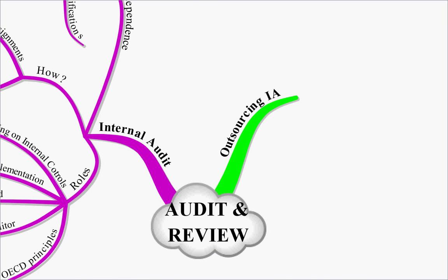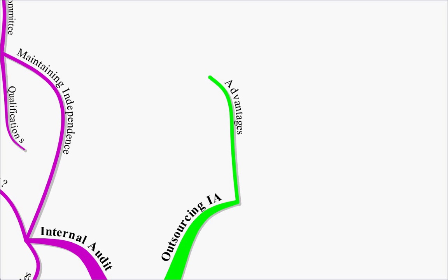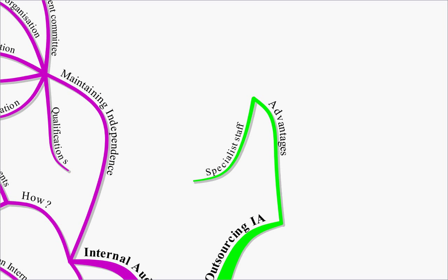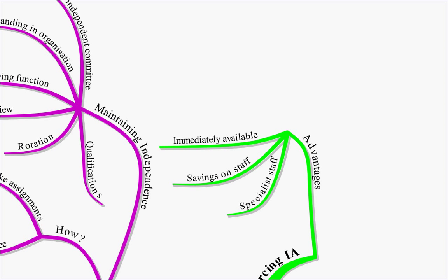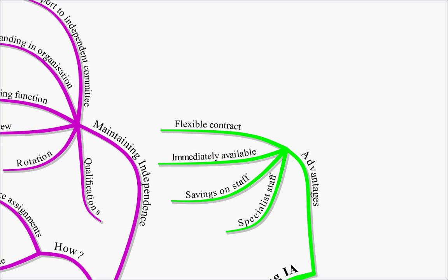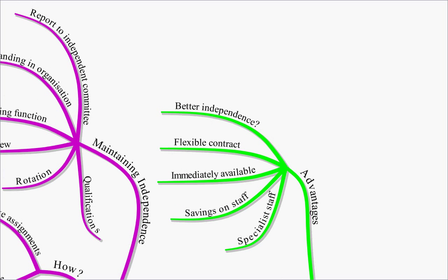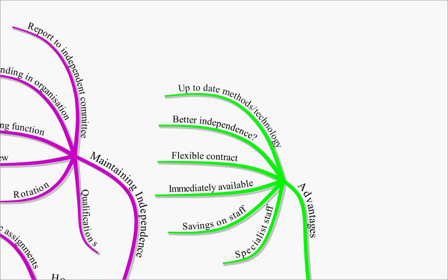What about outsourcing your internal audit department rather than having it as a department of your actual firm? Well there are several advantages to this. You'll have specialised staff. You'll save on staff because you won't have to provide your own. It will be immediately available. You won't have to take a year or so setting up your internal audit department. If you outsource it it's immediately available. You can also take them on on a flexible contract. Better independence. I put a question mark there simply because if you outsource internal audit, you also have the threat of losing your contract, so again they may be reluctant to highlight problem areas. But they will have up to date methods and technology because they specialise in the area.